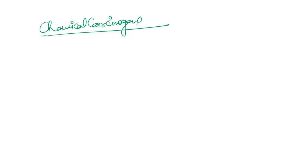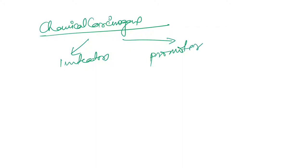Let's start with chemical carcinogens. Chemical carcinogens have two types: one are initiators and one are promoters. What do initiators do? They convert normal DNA into mutated DNA.